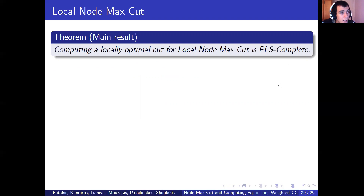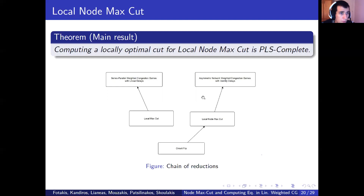The main result in this paper is showing that local node max-cut is in fact PLS-complete, despite its seemingly simpler structure. With the help of this result, we are able to show the PLS-completeness of network congestion games with identity delays in the asymmetric case. This is an overview of the reductions in this paper. PLS-completeness of series-parallel networks is obtained by a classical reduction from local max-cut. PLS-completeness of congestion games where all players are weighted requires a more delicate approach, obtained via the novel problem of local node max-cut. The PLS-completeness of local node max-cut itself is obtained from a problem called circuit flip, which we will explain shortly.